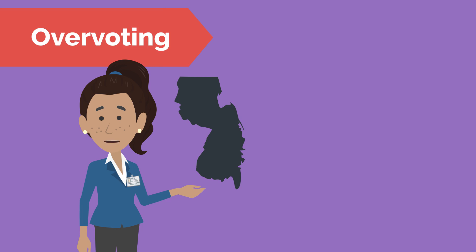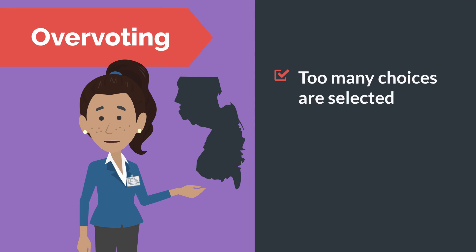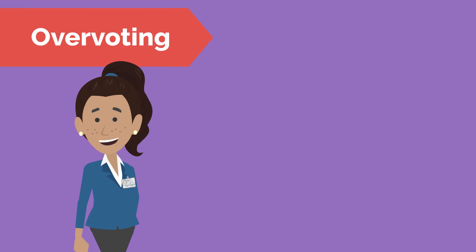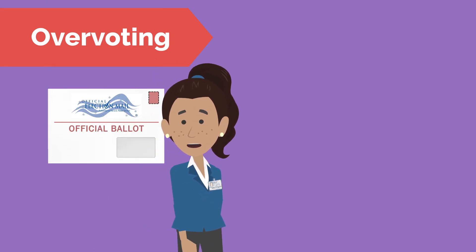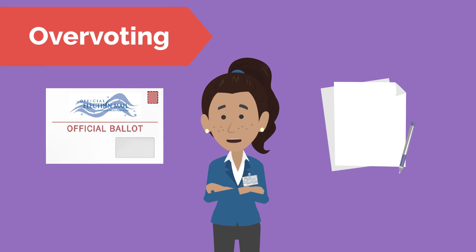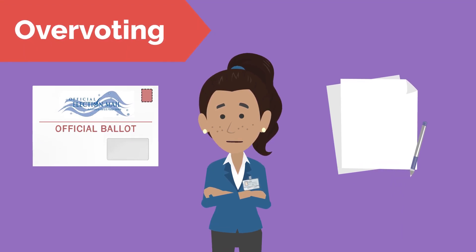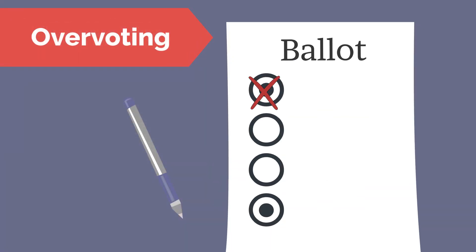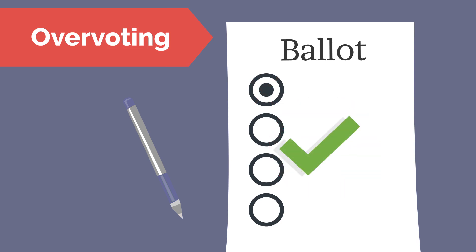That brings us to overvoting. An overvote occurs in an election when too many choices are selected for any particular race on a ballot. New Jersey's voting machines will prevent you from overvoting, but if you are voting a mail-in ballot or a hand-marked paper ballot, you'll need to verify for yourself that you've only selected the indicated number of candidates per race. If you do submit an overvote, none of your choices will be counted for that race, but the rest of the ballot is still counted normally.